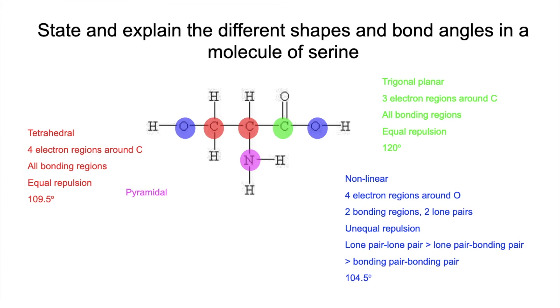We're going to finish with this nitrogen here. That's got a pyramidal shape. We've got four electron regions around the nitrogen, three bonding regions and one lone pair. So there's your three bonding regions and there's a lone pair on the nitrogen as well.